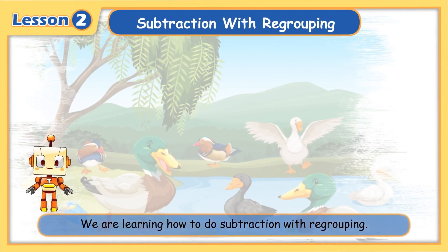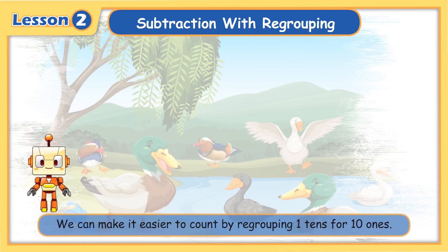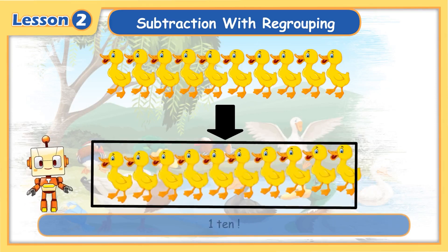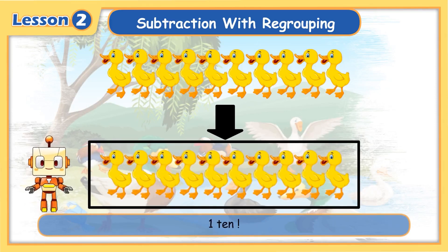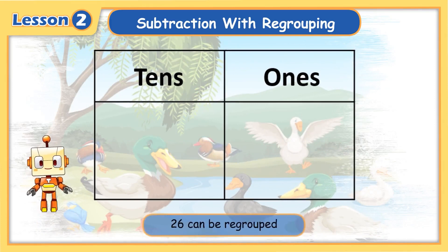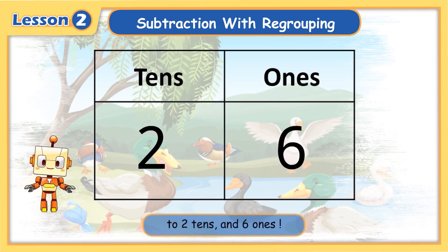We are learning how to do subtraction with regrouping. We can make it easier to count by regrouping one ten for ten ones. Ten ones is equal to one ten. For example, twenty-six can be regrouped from twenty-six ones to two tens and six ones.